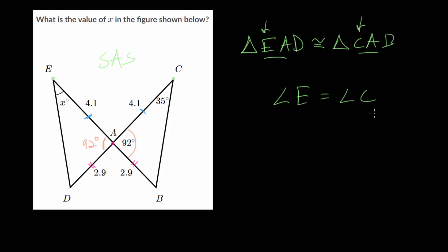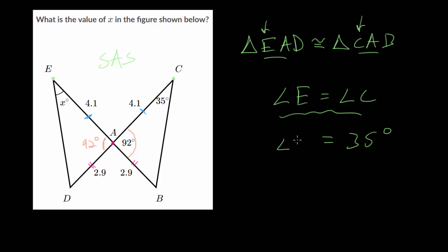You could write this with three letters if you want — angle AED equals angle ACB — but since there's only one angle E, we can just write it as angle E. Comparing the two angles, we know angle C is 35 degrees, so that means angle E, the missing angle, is also 35 degrees.